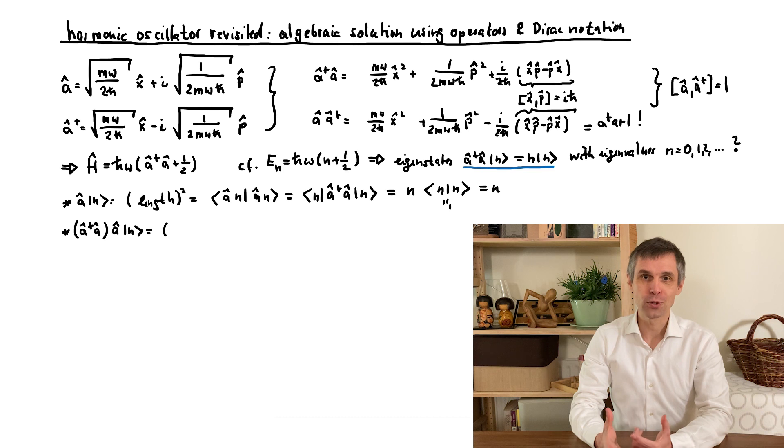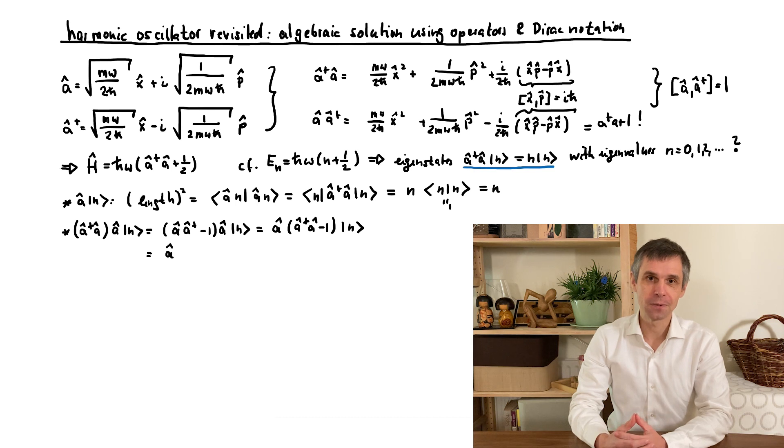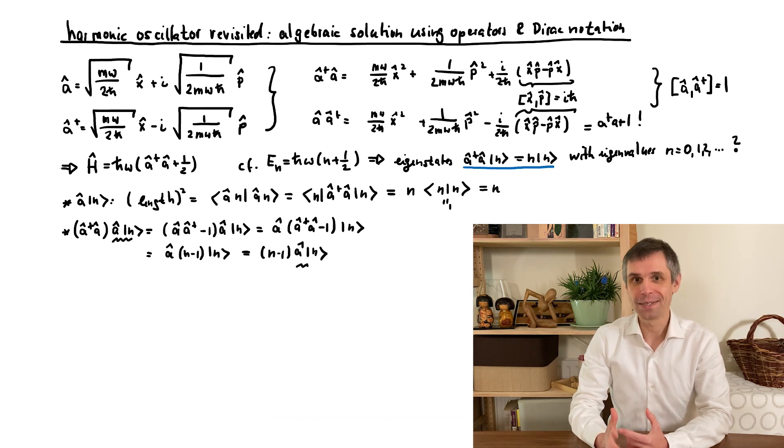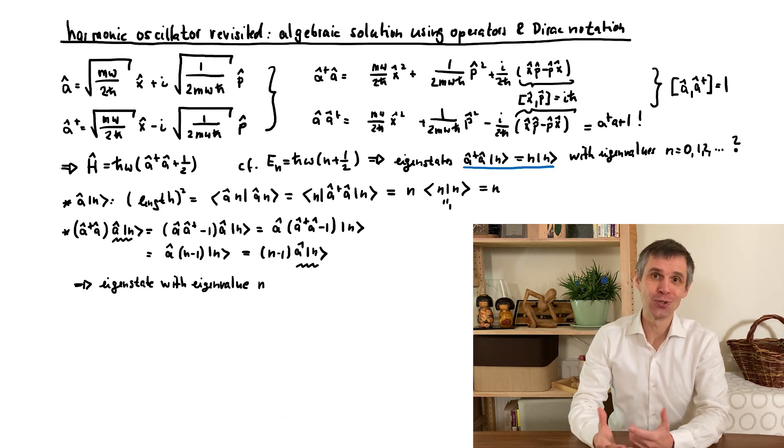Next, we apply the number operator to this new state. And by just proceeding algebraically and using the commutator, we find that this is also an eigenstate, but with the eigenvalue n-1. So now we have determined what the operator A does to a known eigenstate.